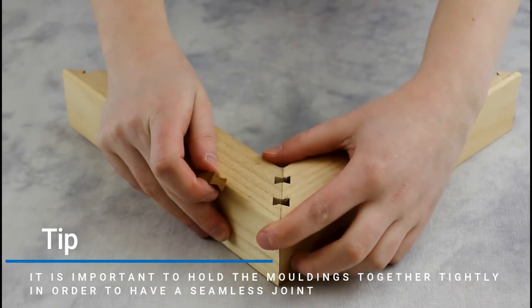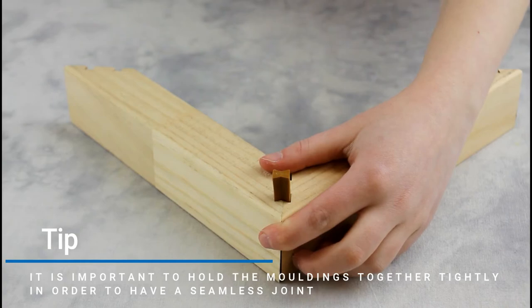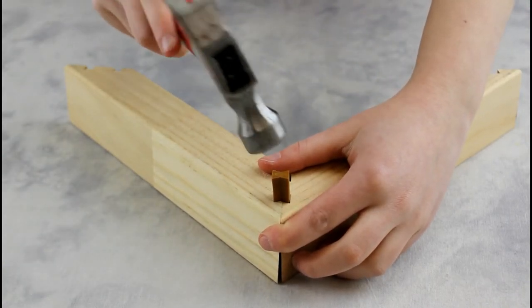These keys are designed to join two corners of a frame together. Holding the moldings together, we will place the first dovetail key into the hole.